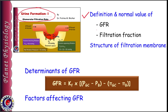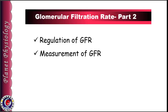In the previous video we studied the definition and normal value of GFR, filtration fraction, and the structure of the filtration membrane. We also studied that GFR is determined by filtration coefficient and pressure gradient across the glomerular membrane, and any factor that alters these determinants leads to changes in GFR. Today we shall study how GFR is regulated and how it is measured. This is Pratima and you are watching Planet Physiology.